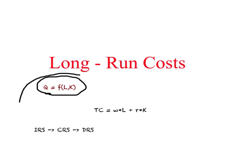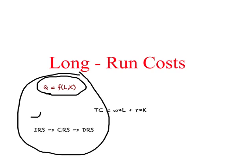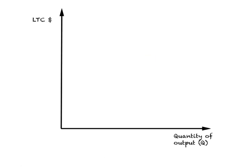Now what we do is plot total cost against output. On the vertical axis we have long-run total cost, denoted by LTC in dollars, and on the horizontal axis we have quantity of output denoted by Q. Based on all that we know, we can plot the total cost curve.